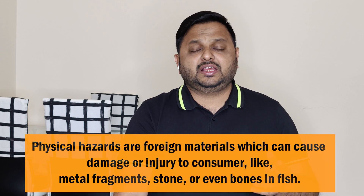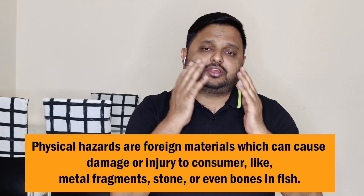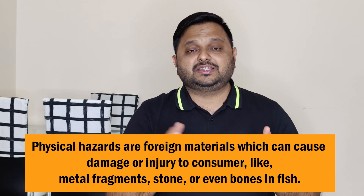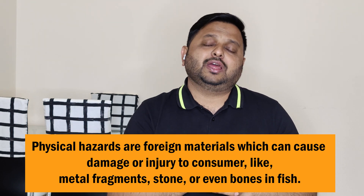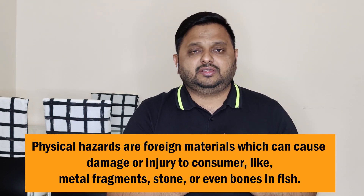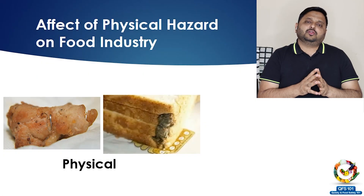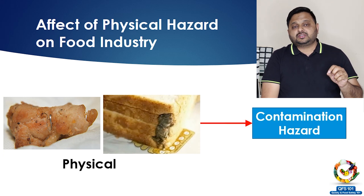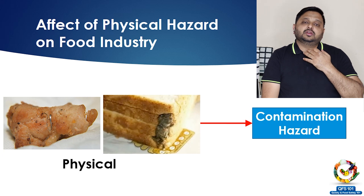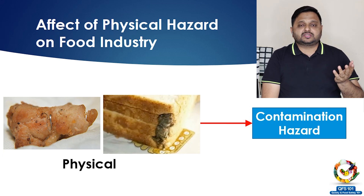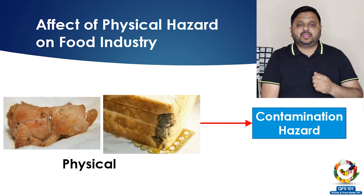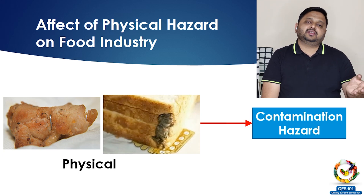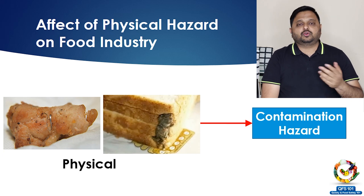Physical hazards are dead materials that are visible to our eyes — things like metal objects or hair from food handlers. They cause contamination in the food industry. Metal objects can be very dangerous, causing damage to a customer's mouth or throat, and they are also very unpleasant. Imagine eating a sandwich and finding hair inside — as a customer you would not be happy.